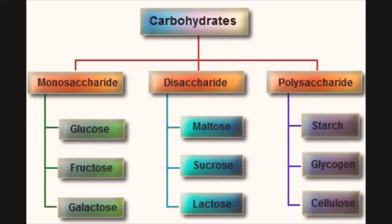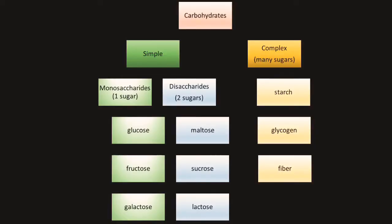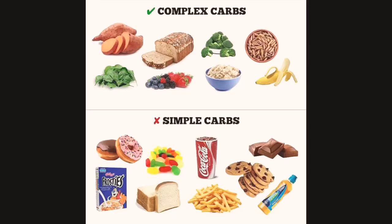Monosaccharides are the smallest sugars. Disaccharides have two molecules — examples include lactose, fructose, and sucrose. Polysaccharides are made of more than two molecules — an example is glycogen in the liver. We also have simple carbohydrates and complex carbohydrates. Simple carbohydrates are small molecules and a rapid source of energy — examples are candies, sugars, and white bread. Complex carbohydrates stay longer in the body and burn slowly — examples include whole grain, whole grain pasta, fruits, and vegetables.